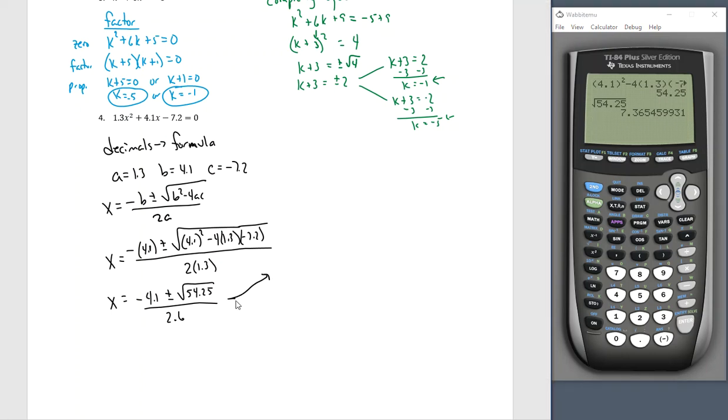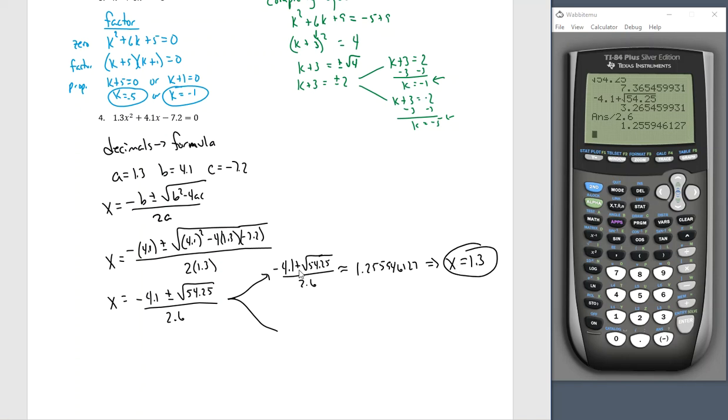We'll have negative 4.1 plus the square root of 54.25 divided by 2.6. So I'm going to enter negative 4.1 plus square root of 54.25. Notice I didn't just start typing that decimal, I want the big number itself, the whole thing, and then I'm going to divide it by 2.6. And that answered 1.255946127. So we're going to round that to one decimal place as our numbers are to start. I'm going to call that x equals 1.3. Our exact answer is sitting right here. Our other exact answer...